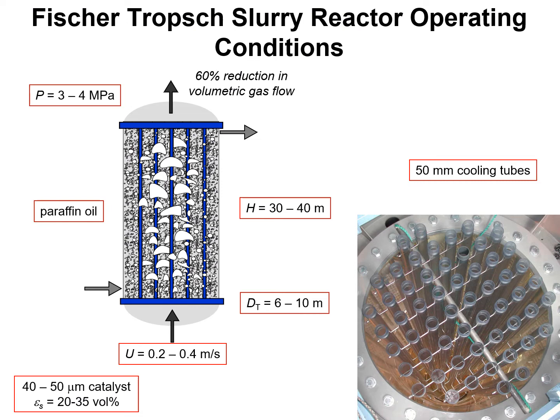Before we delve into the bubble column hydrodynamics, let's get a feel for the operating conditions for a Fischer-Tropsch slurry reactor. Typically, the gas velocities entering the FT bubble column slurry reactor are in the range of 20 to 40 centimeters per second.